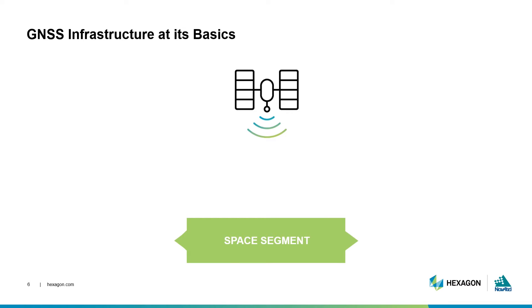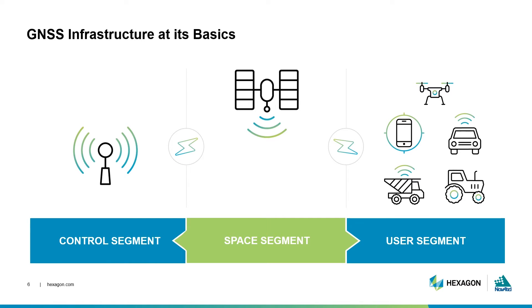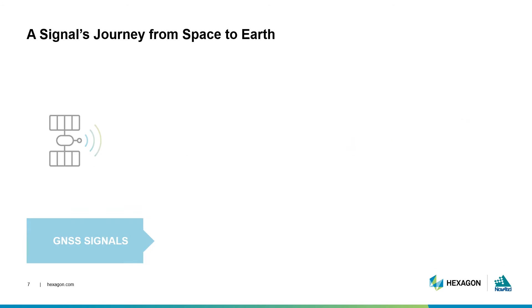Let's look at the infrastructure that the satellite signal goes through. We've been talking about the space segment so far. At its basics, the satellites are managed by control stations. The control segment helps maintain the accuracy of a satellite's position and timing, and provides an element of quality control to the signal. The satellite signal then travels to the user segment, which includes equipment that processes the received signals and calculates your position. These segments form the whole infrastructure that supports satellite positioning. Within the infrastructure are pieces of technology that handle the processing of your position.